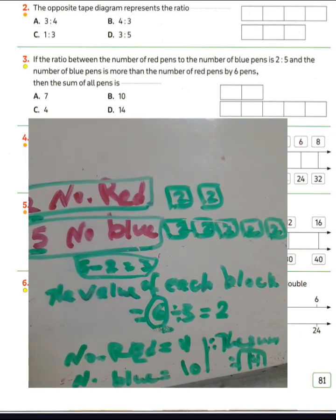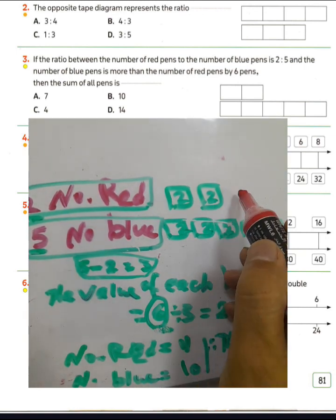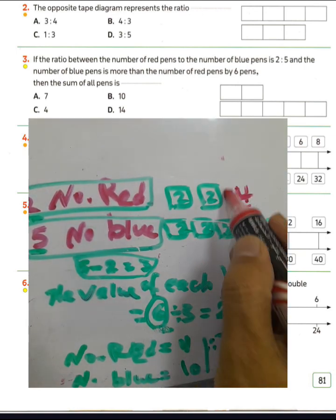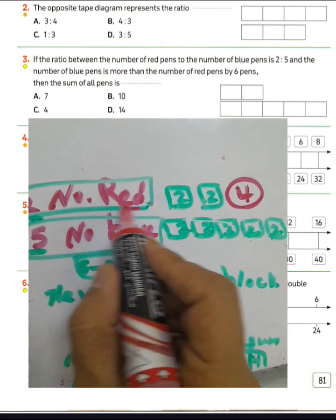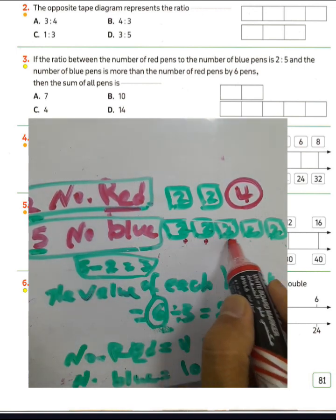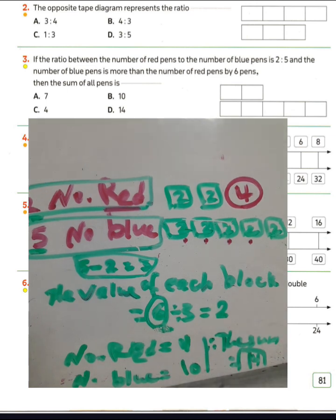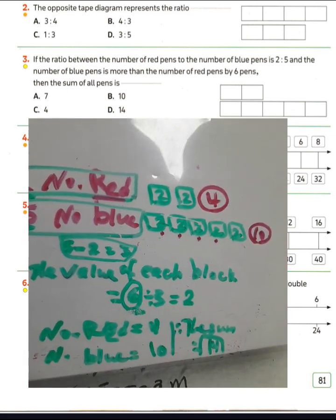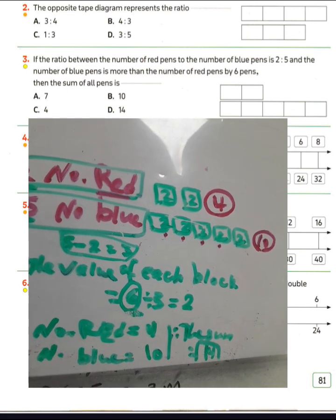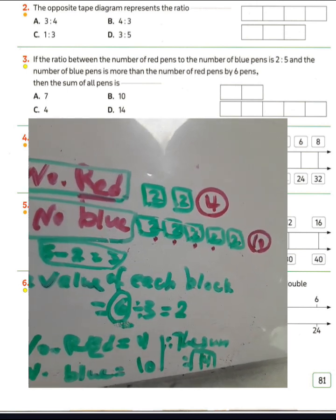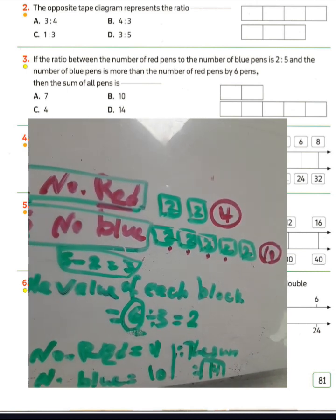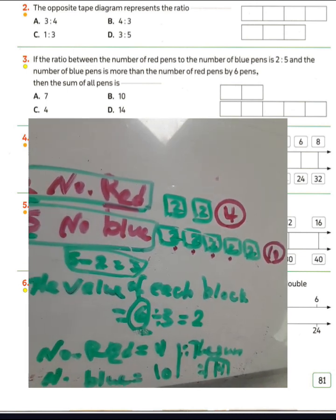The total beans: we have 2 plus 2 equals 4 red beans, and 5 times 2 equals 10 blue beans. 10 plus 4 equals 14. The total number will be 14.